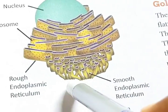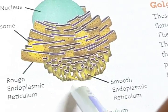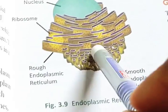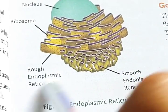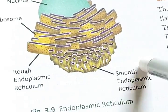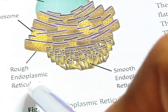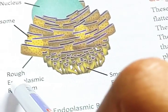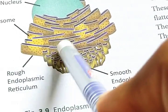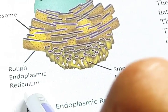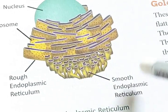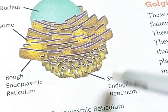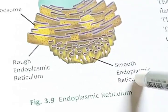Depending on the presence of ribosomes on the surface of endoplasmic reticulum, endoplasmic reticulum are basically of two types: rough endoplasmic reticulum and smooth endoplasmic reticulum. Where ribosomes are present on their surface, they are rough endoplasmic reticulum, and where the endoplasmic reticulum is not attached with ribosome, they are smooth endoplasmic reticulum.